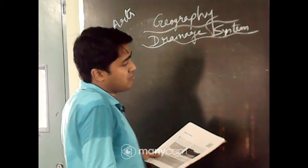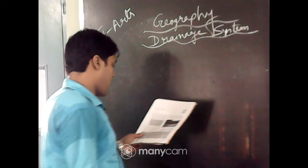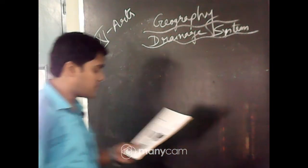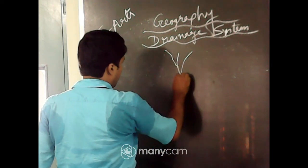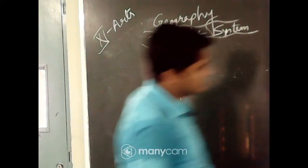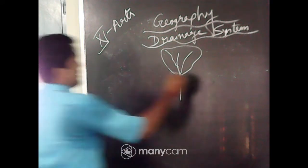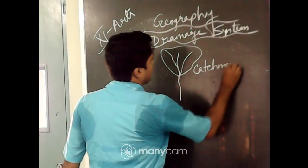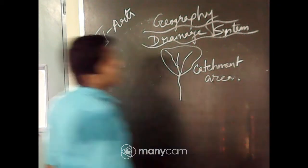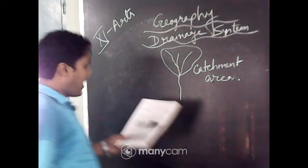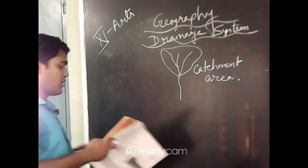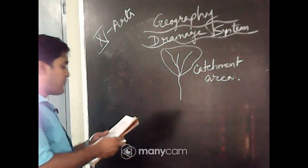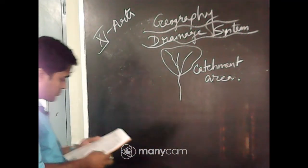So listen, from catchment area today I will start. The river drains the water collected from a specific area — it is called catchment area. This total area from where the river collects the water is the catchment area. The area drained by a river and its tributaries is called drainage basin. And the boundary line separating one drainage basin from another is known as watershed.